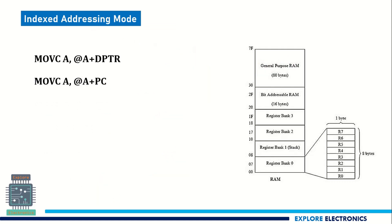Then we have indexed addressing mode. Indexed addressing mode means we are going to access the content of the code memory — that is, program memory. You can see MOVC here: MOVC means it accesses code memory or program memory. If we are accessing program memory, then it is indexed addressing mode. Here also the at-sign is used — do not get confused. With the at-sign, in indirect addressing mode we use MOVX, which corresponds to external RAM. When we access code memory instead, it becomes indexed addressing mode.